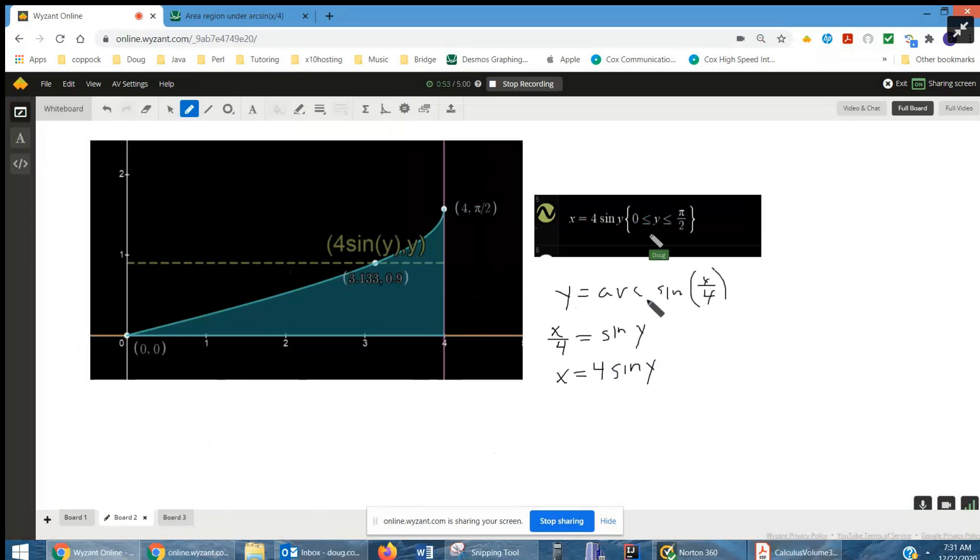y is the angle that has a sine of x over 4, then x over 4 must equal the sine of y. So x equals 4 sine y, that represents this distance right here.